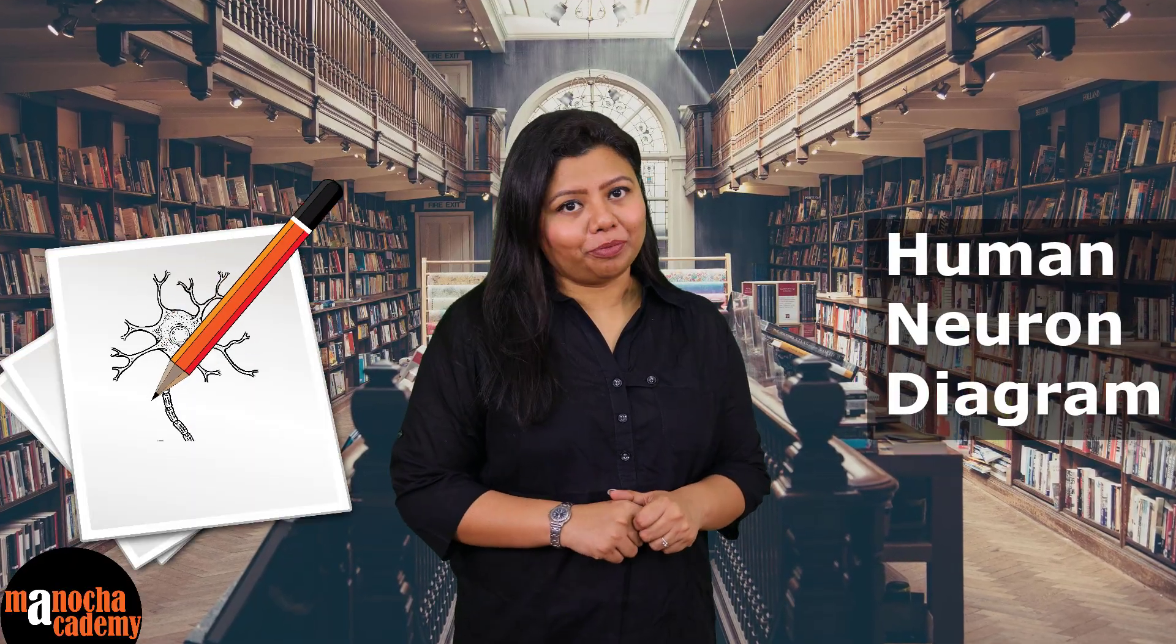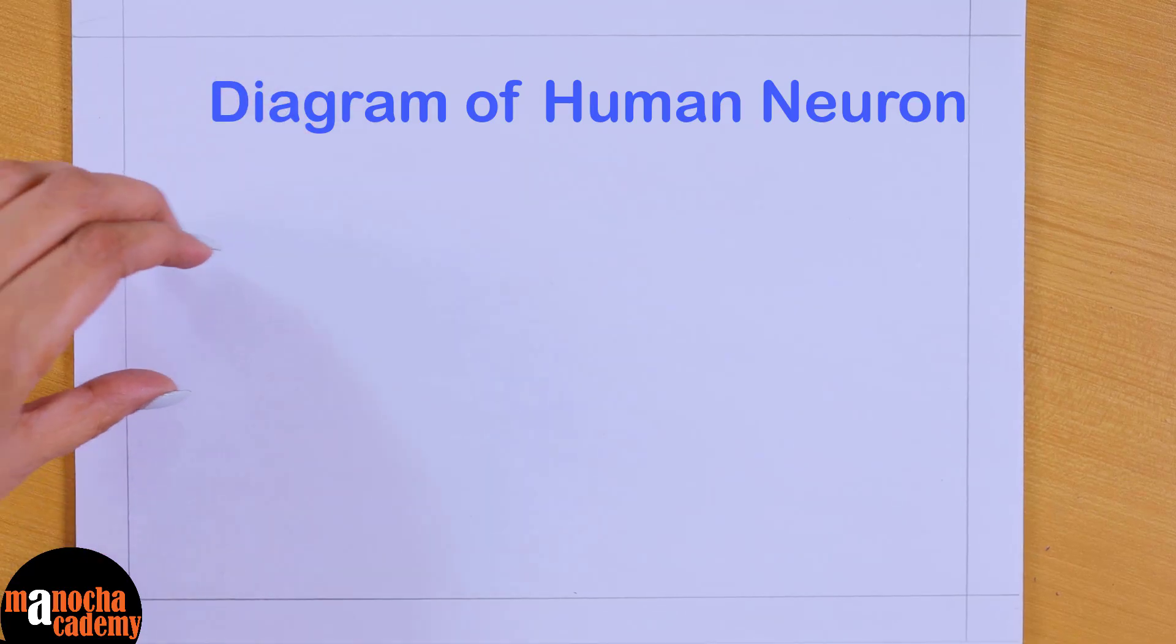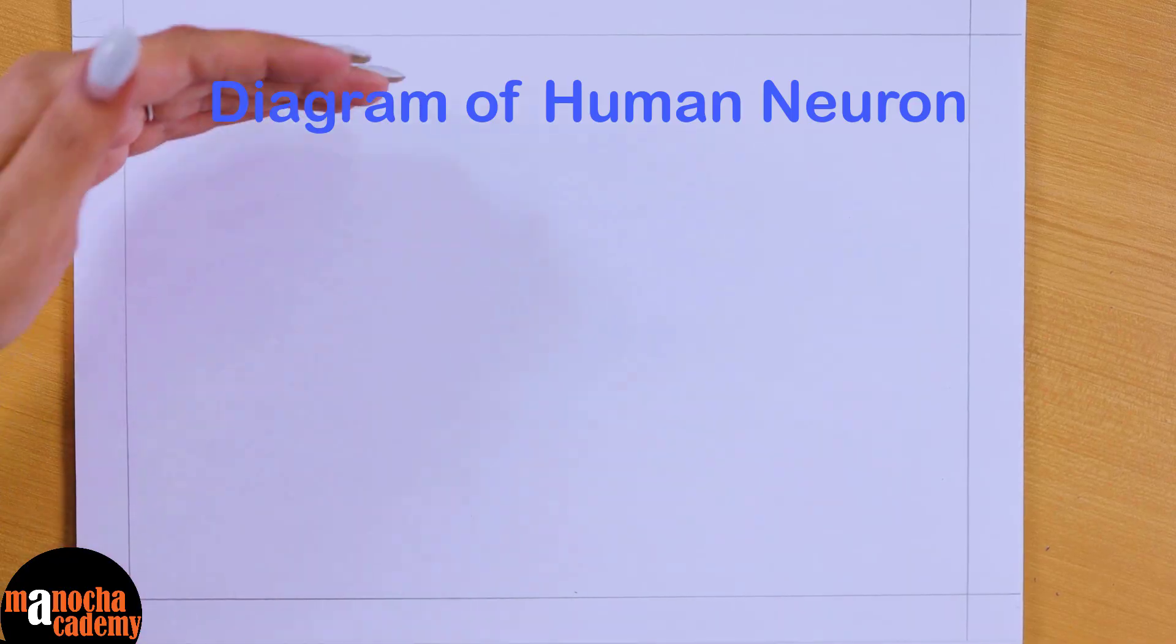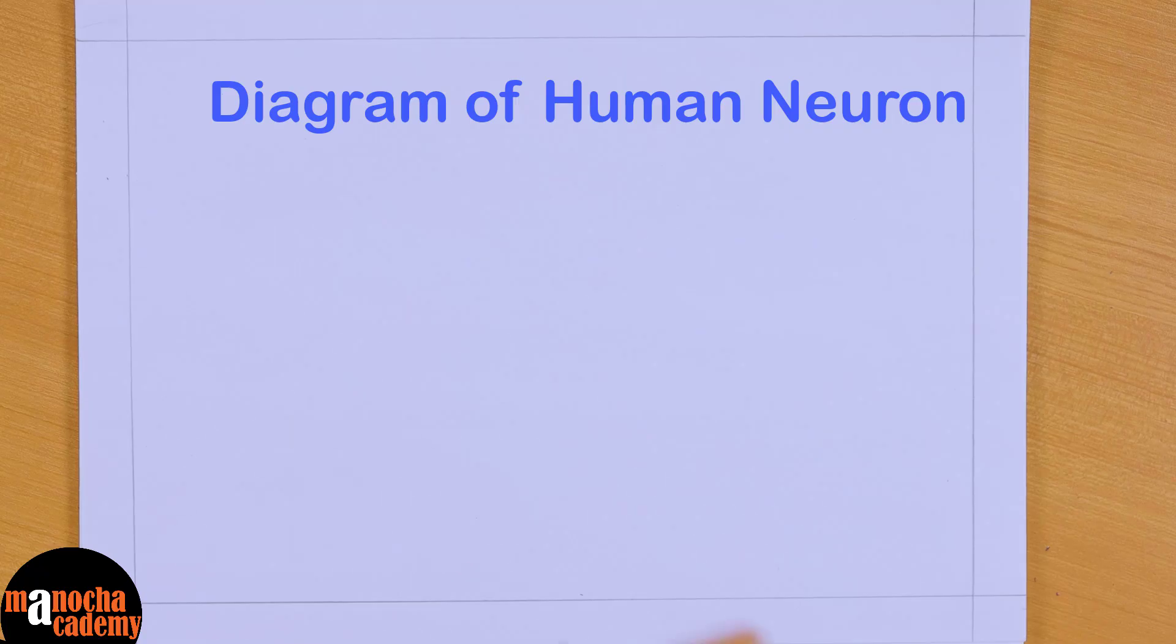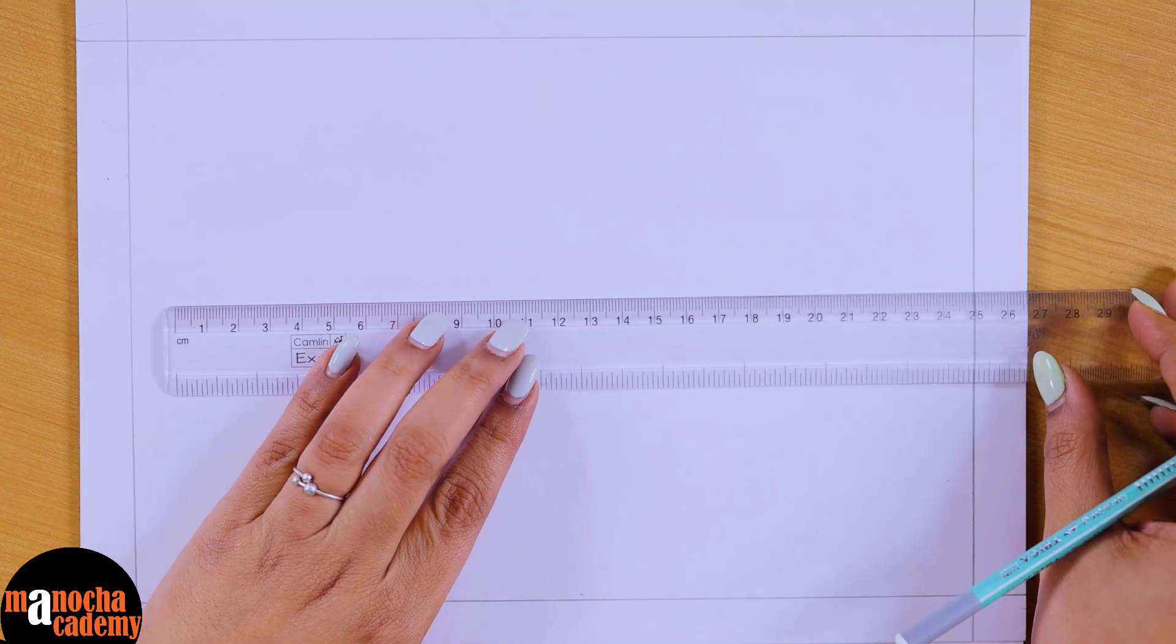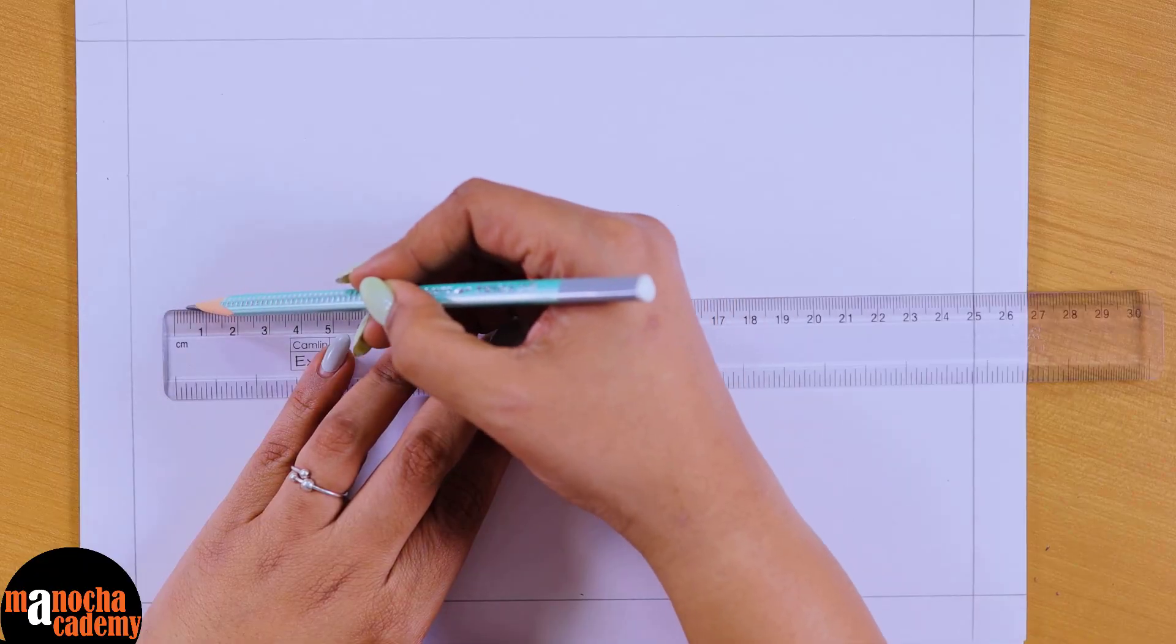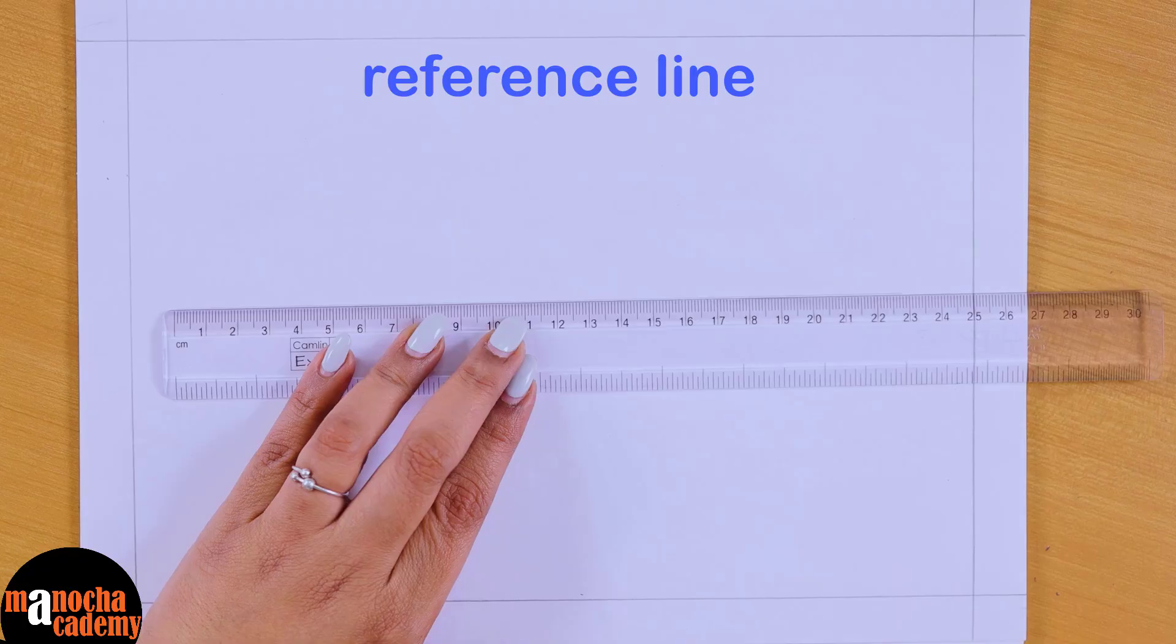Alright, so we are going to draw the neuron. Always whenever you are drawing a diagram, give a margin like this on all four sides. Before you start drawing, just take a ruler and draw a very fine light line.